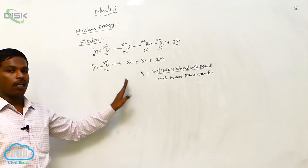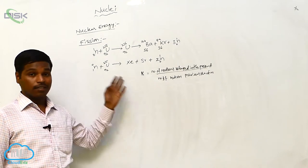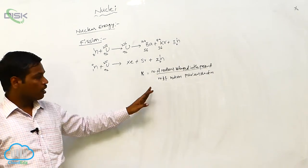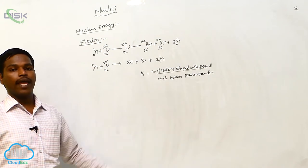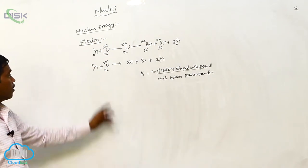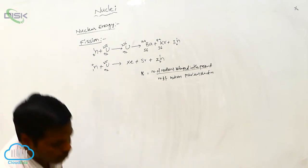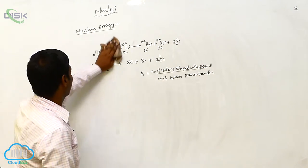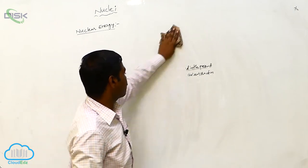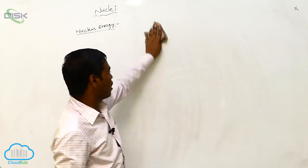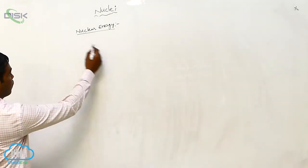If the chain reaction is controlled, we can get sustainable energy. If the chain reaction is uncontrolled, it leads to an explosion. The nuclear reactor is based on the principle of controlled chain reaction.